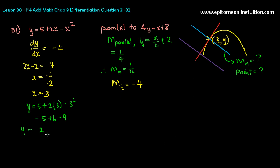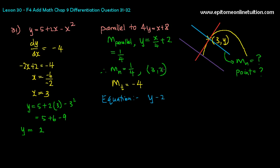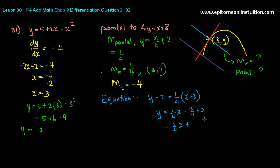So now to find the equation of the normal — do not forget, you're looking for the equation of the normal. You have found the point, which is (3, 2). The gradient of the normal is 1 over 4, and the point is (3, 2). So: y minus 2 equals (1/4)(x minus 3), which gives y equals (1/4)x minus 3/4 plus 2, that is (1/4)x plus 5/4. Making it look nice: 4y equals x plus 5.